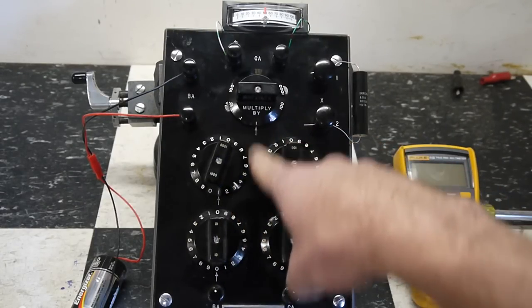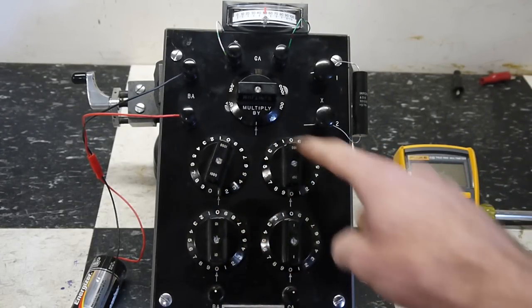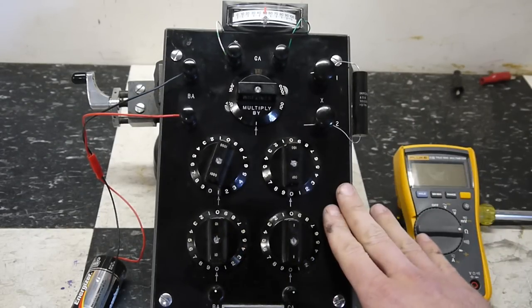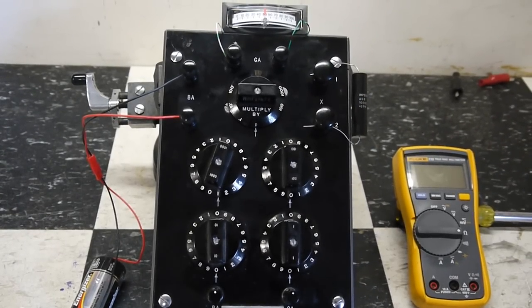We read it out as 1, 0, 0, 0 or 1000 multiplied by 1. So, according to this bridge, this resistor should be 1000 ohms.